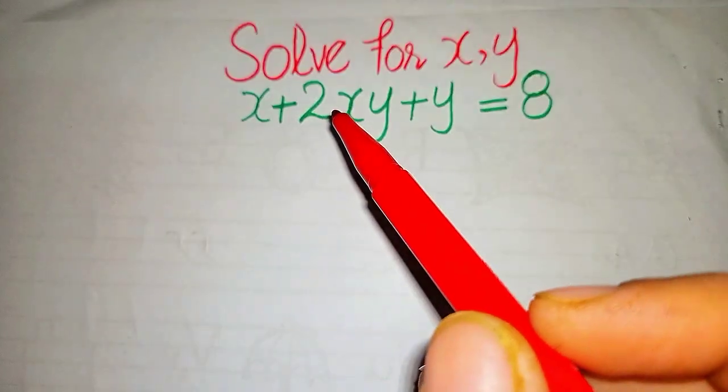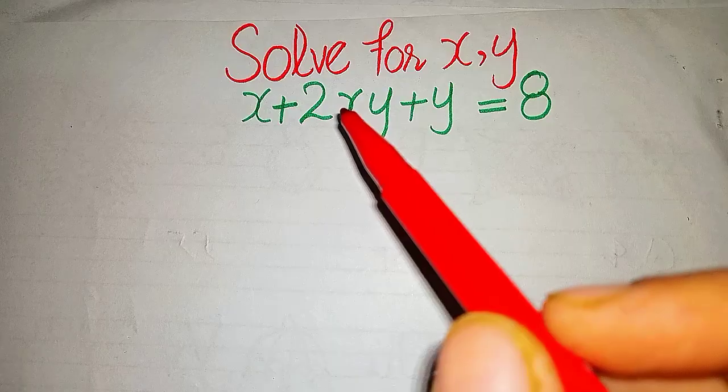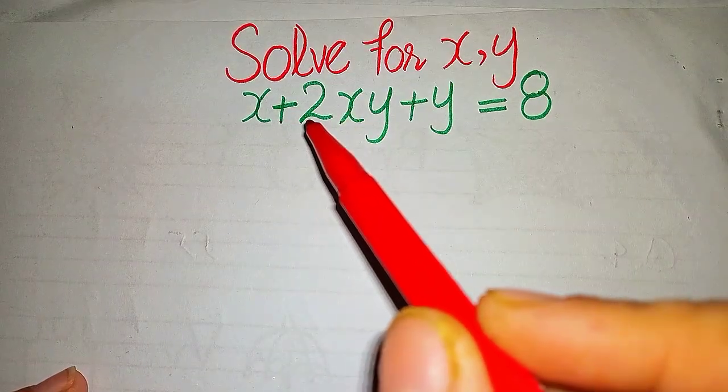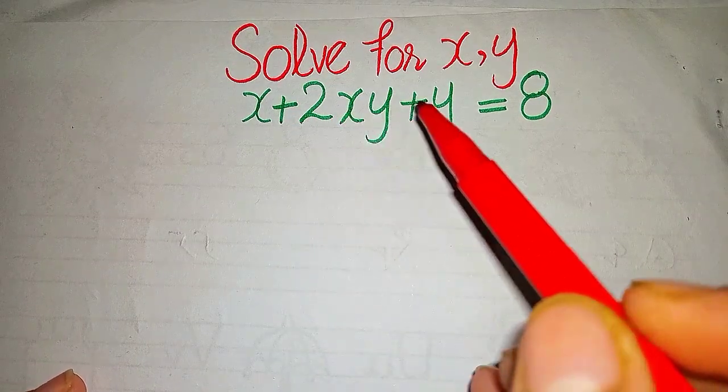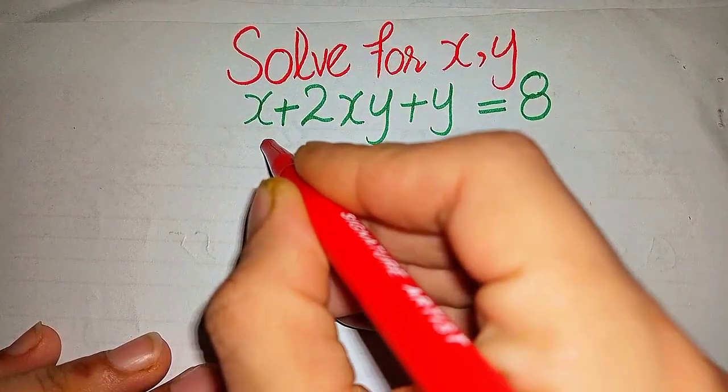Hi guys, welcome to my channel Olympic Learners. Today we are going to solve a nice math Olympic algebraic equation: x + 2xy + y = 8. So let's start our solution.